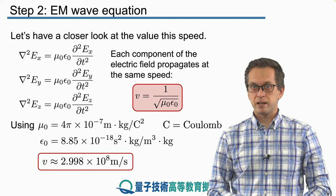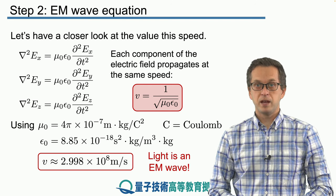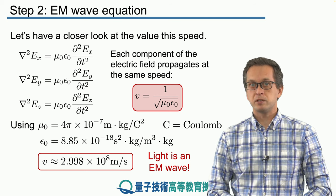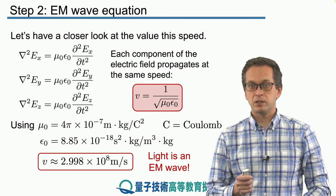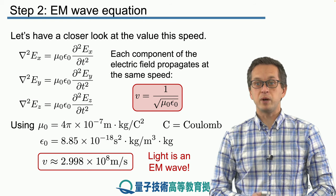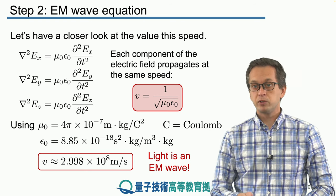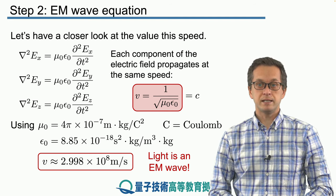Do you recognize this value? This is in fact the speed of light. At the time when Maxwell derived this equation, people could also measure the speed of light and had a pretty good idea what it was. This is the remarkable result that Maxwell showed: light is in fact an electromagnetic wave. Therefore, from now on we will not use the symbol v for the speed of propagation of electromagnetic waves, but will use the standard c.